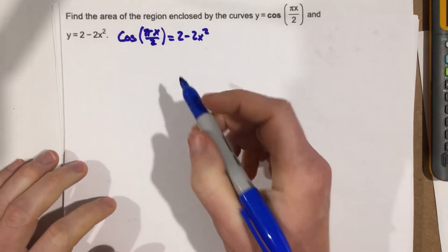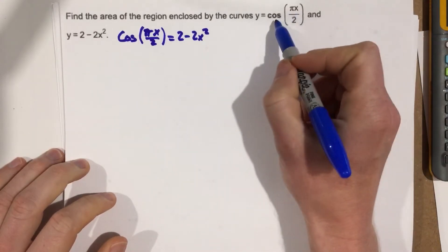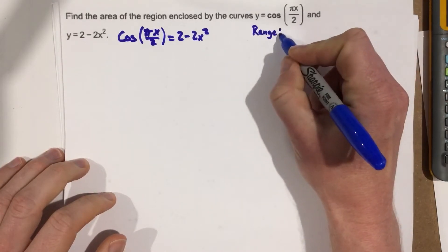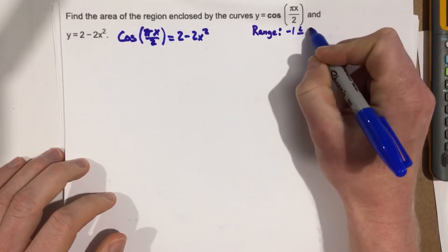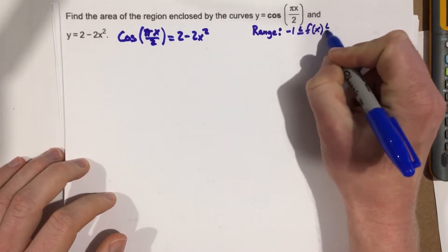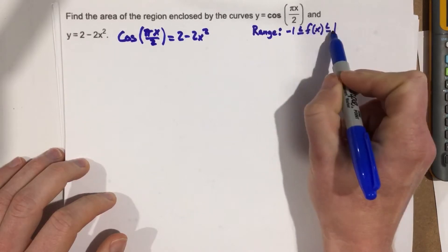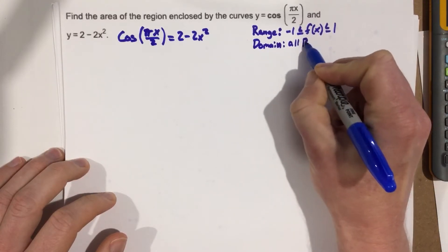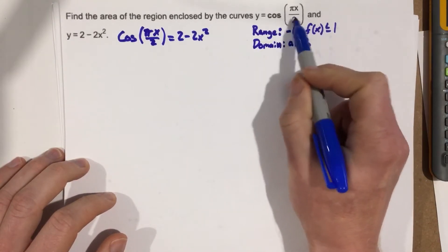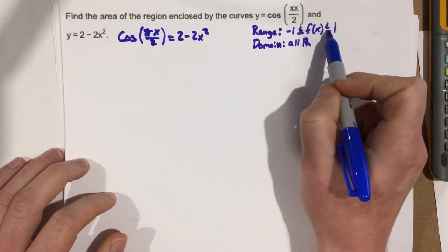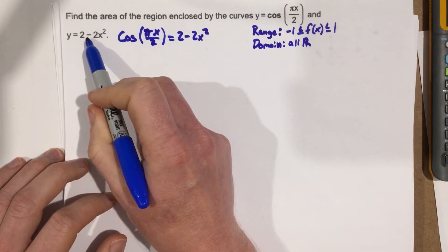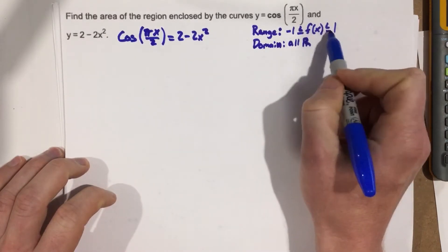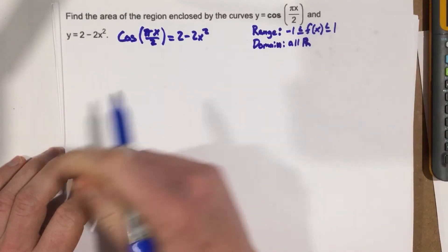One method is a guess-and-check approach. I know the range of cosine, which we'll call f of x, goes from negative 1 to 1. So because the range of this function is negative 1 to 1, I know its solutions have to lie between negative 1 and 1. I thought — why don't we just check negative 1 and 1 to see if those are solutions?